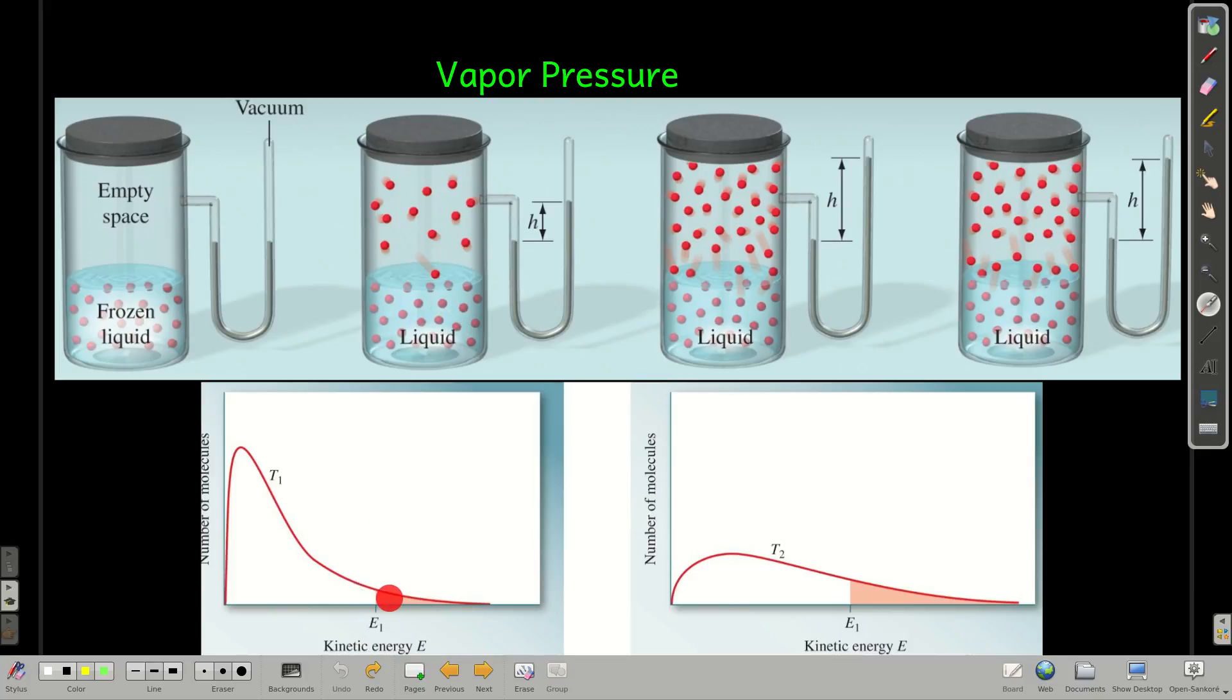You can see here that there are fewer molecules in this colder liquid that have enough energy to escape than in the warmer liquid, which means at equilibrium, at this colder temperature, there will be fewer molecules in the gas phase than at the higher temperature, showing that at lower temperature, the vapor pressure of the liquid is lower than at higher temperature.